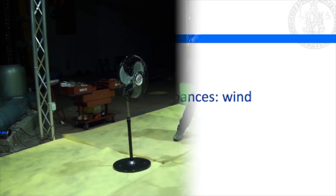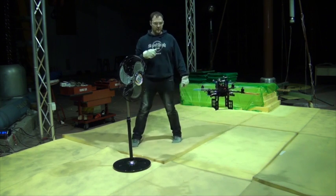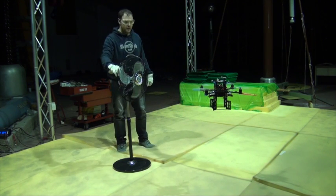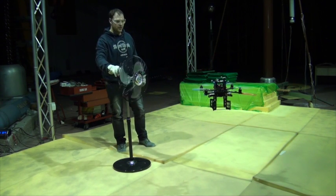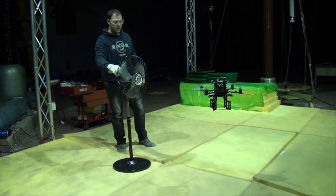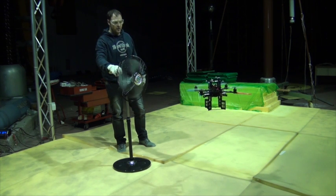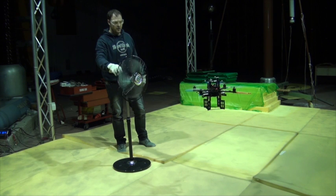A hovering task is performed at 1 m from the ground. An additional load has been put on the vehicle and not considered in the control, while a fan produces wind in front of the quad rotor.